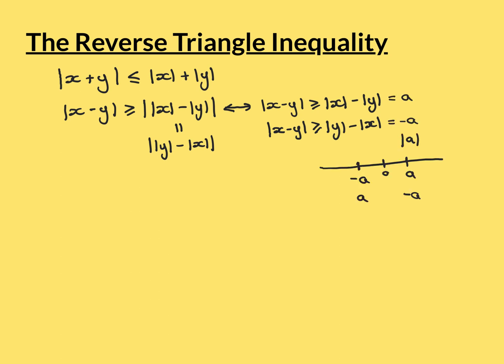The reverse direction is very easy. We start with these two statements being true: that mod of x minus y is greater than or equal to both mod of x minus mod of y, and mod of y minus mod of x. For simplicity, I'm going to call mod of x minus mod of y just 'a'. Then mod of y minus mod of x is just minus a. So I've now got that mod of x minus y is both greater than or equal to a and greater than or equal to minus a. From that, I can conclude it must be greater than or equal to the modulus of a — and substituting back, that's exactly the reverse triangle inequality.